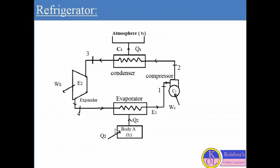To maintain this temperature T2 of the body A, that heat has to be removed from body A. So this heat Q2 is absorbed by the working fluid which is called the refrigerant. This heat Q2 is absorbed by the working fluid — the refrigerant — which evaporates in the evaporator, transferring heat Q2 to the refrigerant.